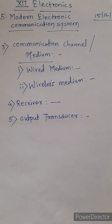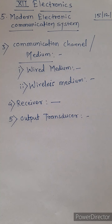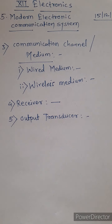Now, in the next lecture, we will cover types of communication systems. The important topics are: analog and digital communication; one-way communication, that is simplex, and two-way communication, that is duplex; and baseband and modulated communication. We have three types to cover one by one. Thank you.